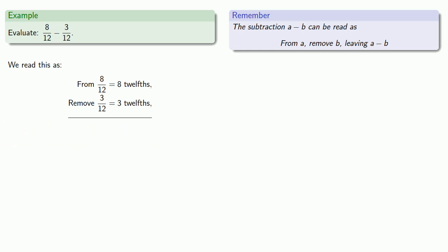Well, if I have eight of something and I remove three of the same thing, I should have five left and so I should end up with five twelfths.